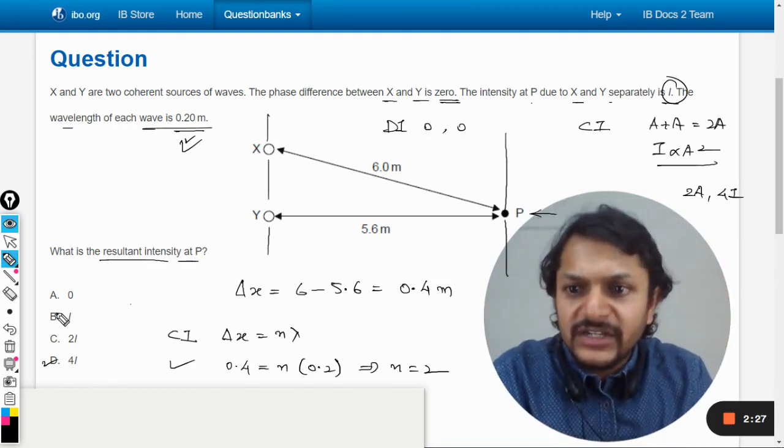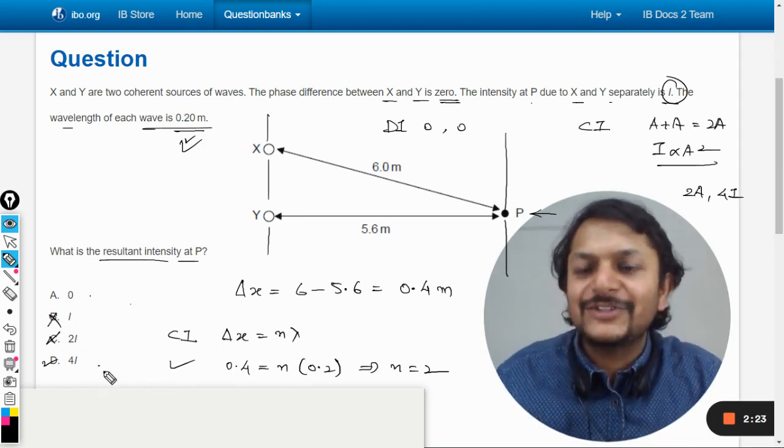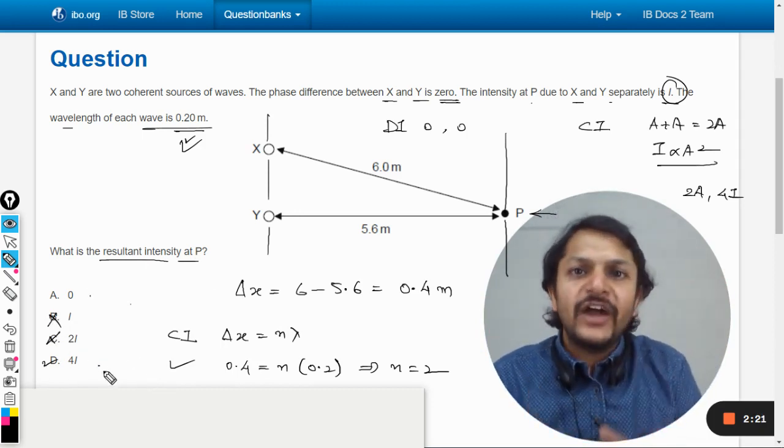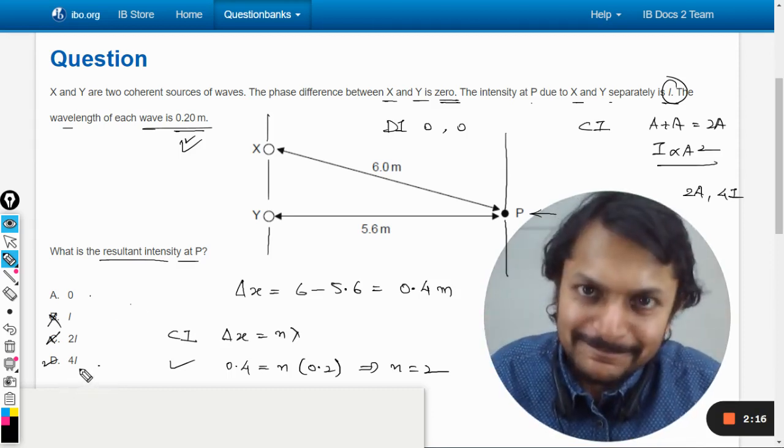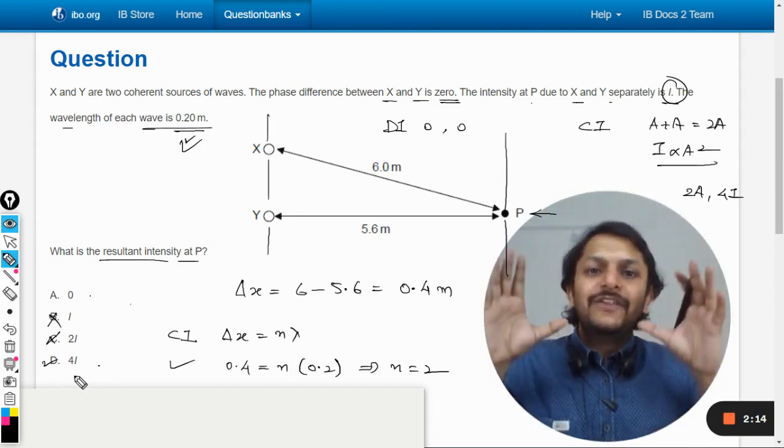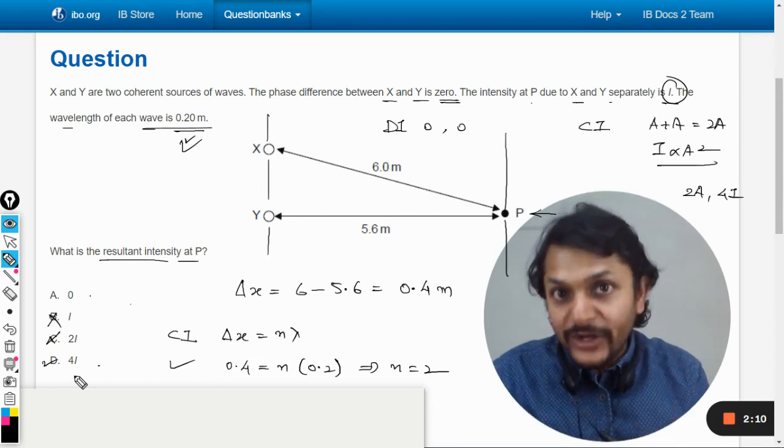So if we know this information definitely these two things were out of picture. And you were already at these two positions. If you were able to find that yes there will be a constructive interference, there was no doubt about it. The answer would be D only. So this is how we can create our answer in a quicker manner.